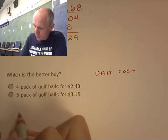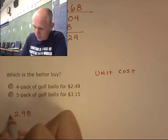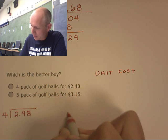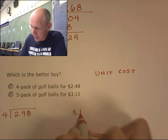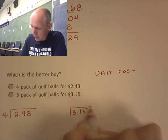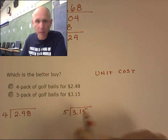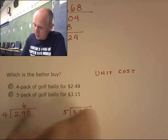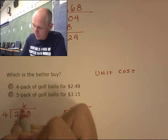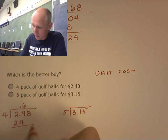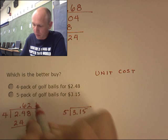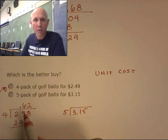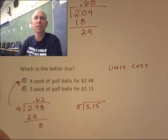So this is going to be $2.48 divided by 4 versus $3.15 divided by 5. Well, 4 goes into 24 six times and it goes into 8 two times. So this guy is going to be costing me 62 cents per golf ball.